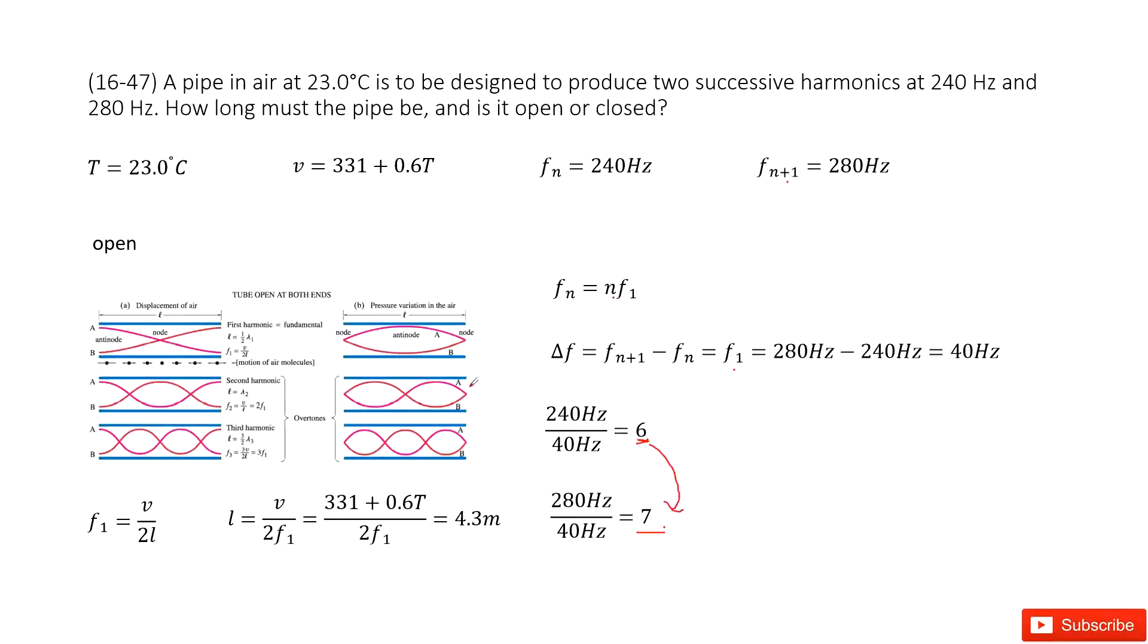So this is an open pipe. We have f1 equals v over 2L, so we solve for L. We input the function for v, which depends on temperature. Since T is given and f1 is given, we get the answer: L equals 4.3 meters.